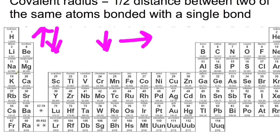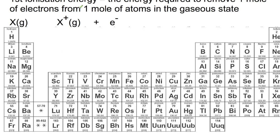The reason covalent radius increases as you go down a group is that going from lithium to caesium, you fill another shell with each row of the periodic table, so atoms are physically getting bigger. Going from lithium to fluorine, however, you're still filling the same shell but adding one more proton each time, increasing the nuclear charge across the period, which pulls electrons in. As you go down a group, additional protons are shielded by the full shells in between.